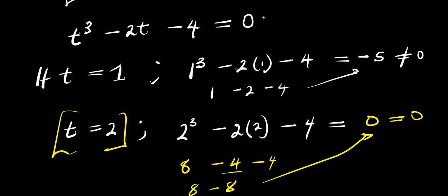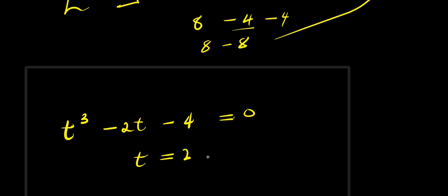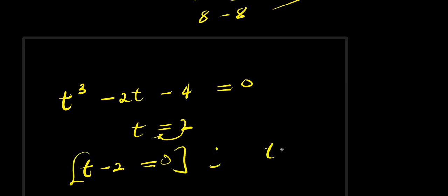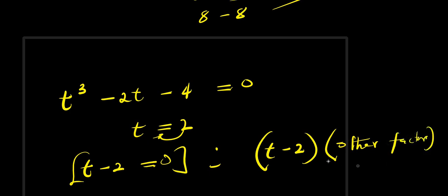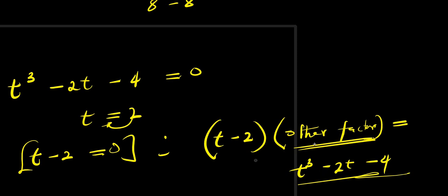So we can rewrite this as t cubed minus 2t minus 4 equals 0, and we are noting t equals 2 as one of the solutions. This means that t minus 2 is one of the factors. So if we have t minus 2 times some other factor, we get t cubed minus 2t minus 4. We have gotten one factor, which is t minus 2, and the solution is t equals 2.